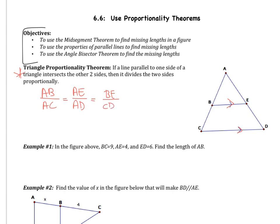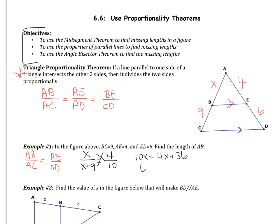Example number one: in the figure above, BC equals 9, AE equals 4, and ED equals 6. Find the length of AB. AB corresponds to the entire side AC, and AE corresponds to the entire side AD. AB is X, AC is X plus 9, AE is 4, and AD is 10. Using cross products, I get 10X equals 4X plus 36. Subtracting 4X gives 6X equals 36, and X equals 6. So AB equals 6.